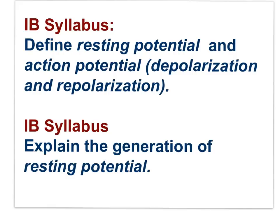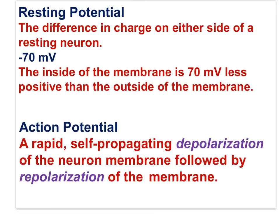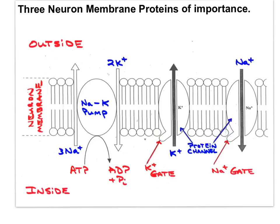Here are the relevant IB syllabus statements: define resting potential and action potential — which is depolarization and repolarization together — and explain the generation of resting potential. The resting potential is the difference in charge on either side of a resting neuron: negative 70 millivolts, with the inside 70 millivolts less positive than the outside. The action potential is a rapid, self-propagating depolarization of the neuron membrane followed by repolarization. To understand it, you need to know three neuron membrane proteins of importance.